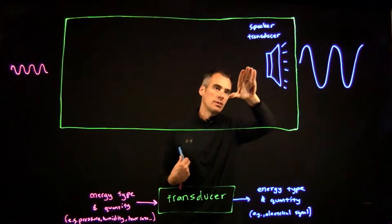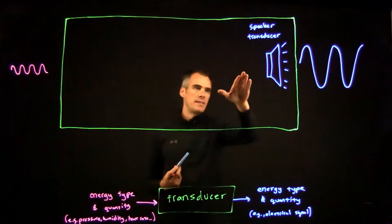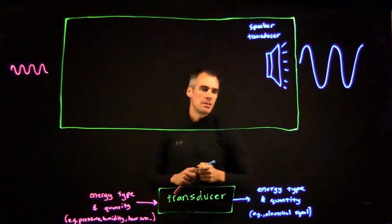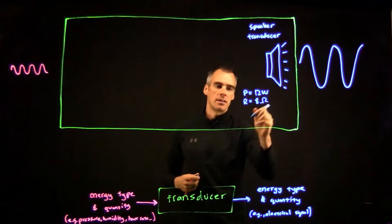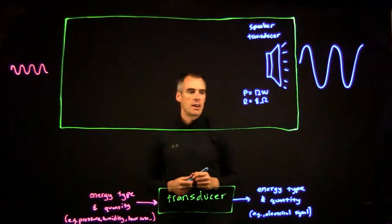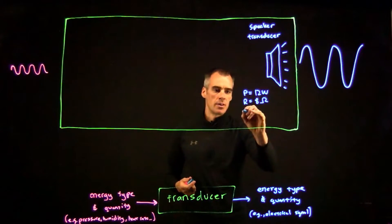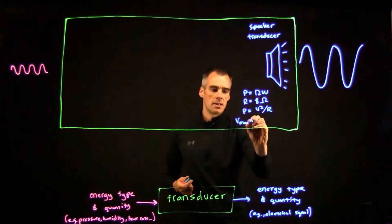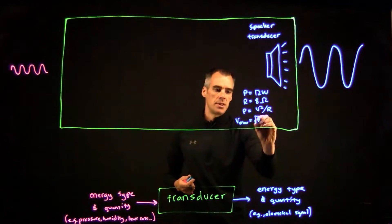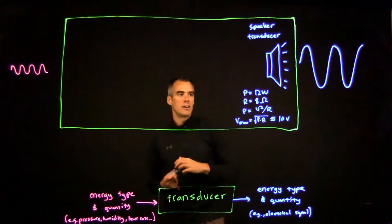That speaker transducer is going to take an electrical signal in and convert it into audio waves — so a certain type of energy, electrical, converted to another type, audio. In order to feed that, we need to feed it with electrical voltage. Let's say our speaker has a power of 12 watts and a resistance of 8 ohms and we want to know what voltage we need. We know that P equals V squared over R, so our V max is going to be the square root of P times R, which gives us approximately 10 volts.